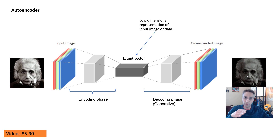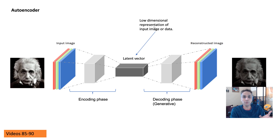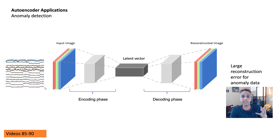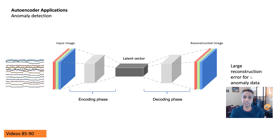As long as the error keeps going down, keep going and stop when you can't improve further. Whatever latent vector remains after training is your low-dimensional representation. The other application is anomaly detection: you train on your input data and look at the reconstruction error. Anything above a threshold reconstruction error is an anomaly — this is how you design an anomaly detection system.